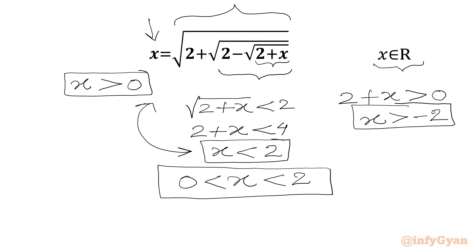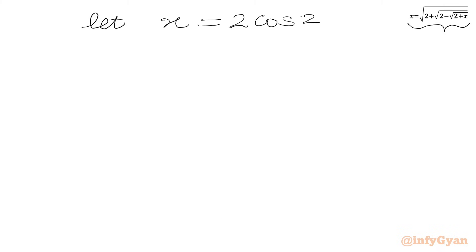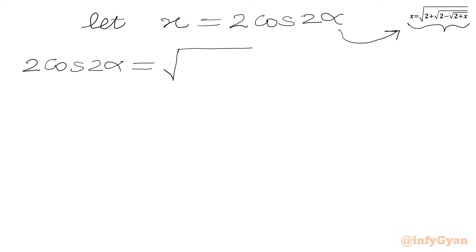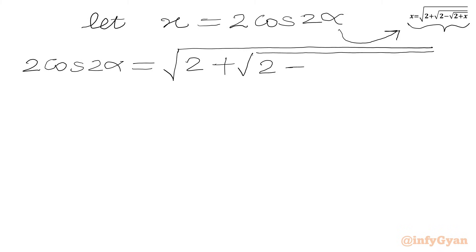Now we will use trigonometric substitution. Let us say x equal to 2 cos 2α. We are going to put this substitution into our equation, so we can write 2 cos 2α equal to square root of 2 plus square root of 2 minus square root of 2 plus 2 cos 2α.